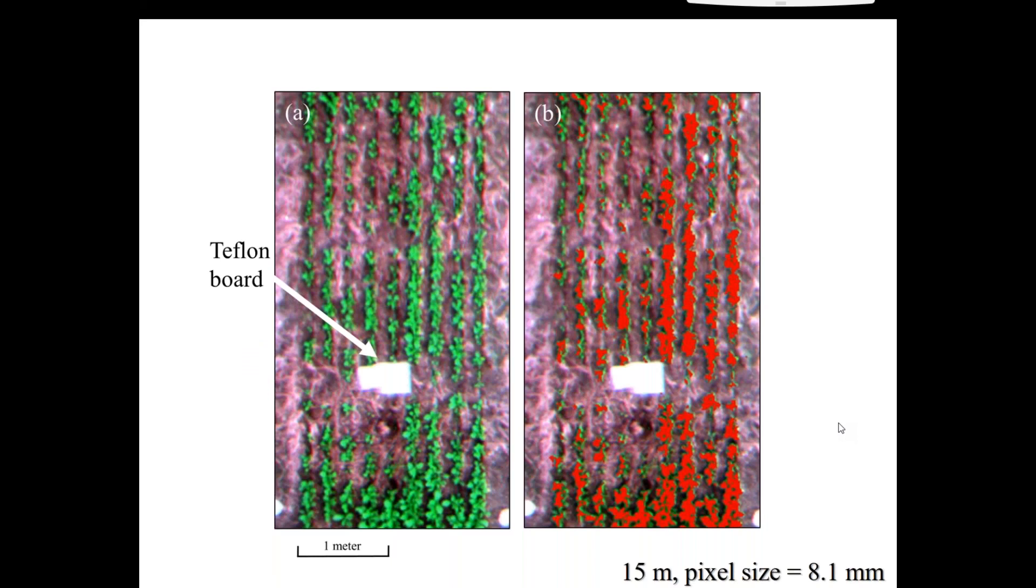So at 15 meters, what I ended up with was a pixel size of about eight millimeters. So below a centimeter. I then looked at some filters to say, well, I can analyze these images as they are, but there's a lot of soil there as well. So if I can just take out the pixels that are plant and don't have much shadow and that sort of thing, can I analyze that as well and see what's going on just with the plants?